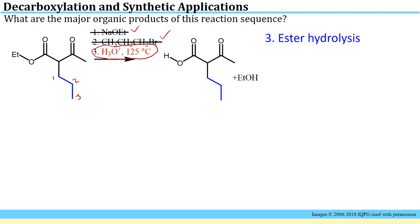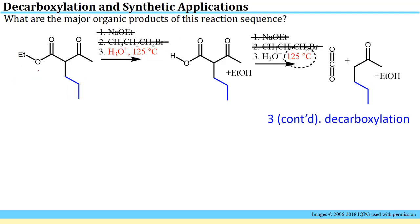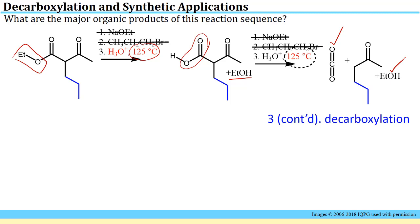Step three is aqueous acid (H3O+) with heating to 125°C. The aqueous acid causes acid-catalyzed ester hydrolysis, generating a carboxylic acid unit and releasing ethanol. Continued heating at this temperature, with the carboxylic acid and one carbon between it and the other carbonyl, satisfies the minimum requirement for thermal decarboxylation. The carboxylic acid unit comes off as CO2, the ethanol remains in solution, and the remaining fragment gives us the ketone product.